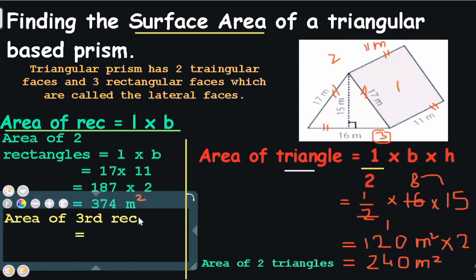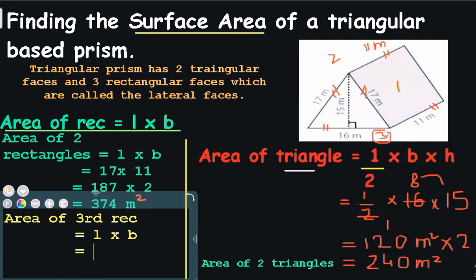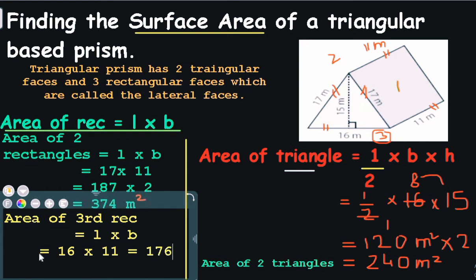Now the area of the third rectangle, which is at the base. Its length is 16 meters and the breadth is 11 meters. So 16 multiplied by 11 is going to be 176 square meters.